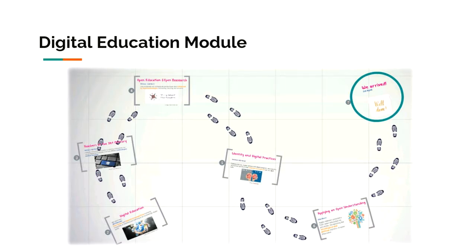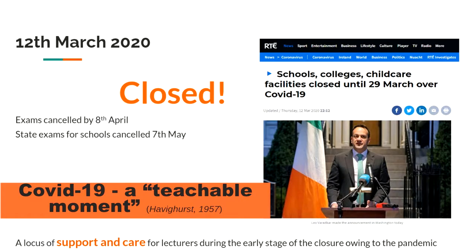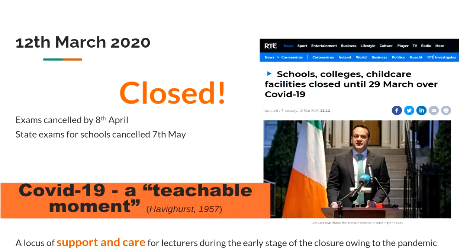We ended up evaluating what kind of digital practices could affect their individual and professional identity. We had just started with our model when March 12th arrived to all of us. Initially considered a temporary decision, pivoting online across the higher education sector began. Our participants were not only studying online after that point, but also rapidly adapting their own teaching and assessment to move online within an organizational context.